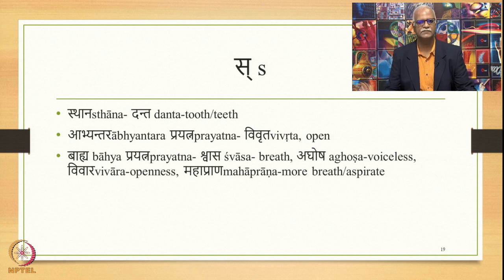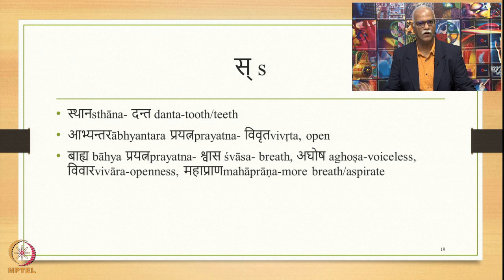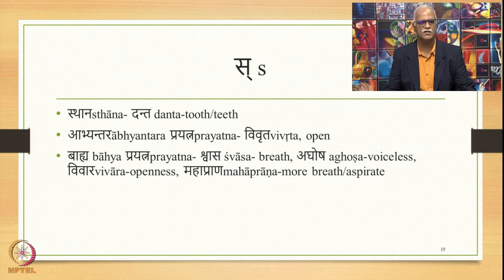The next sibilant sound is Sa, whose place of articulation or sthana is Danta — tooth or teeth. The Abhyantara Prayatna is Vivruta or open. The Bhaiha Prayatna is Shvasa (breath), Aghosha (voiceless), Vivara (openness), and this is also Mahaprana, requiring more breath — it is an aspirate.